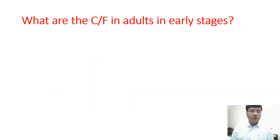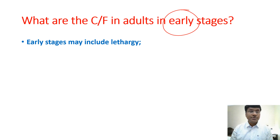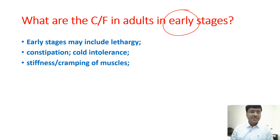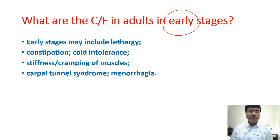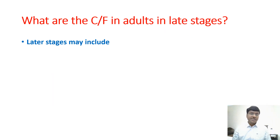What are the clinical features in adults in early stages? They include lethargy, as metabolism of food substances is impaired. There is constipation due to reduced gastrointestinal motility, and cold intolerance due to decreased basal metabolic rate. There is also stiffness or cramping of muscles, carpal tunnel syndrome — caused by edema in the carpal tunnel compressing the median nerve — and menorrhagia.